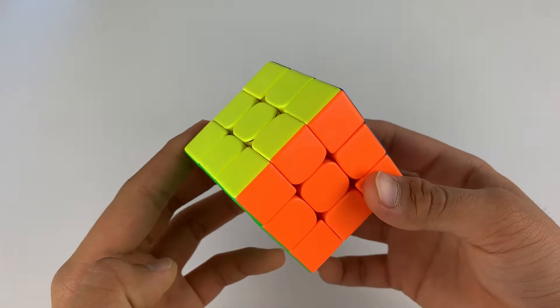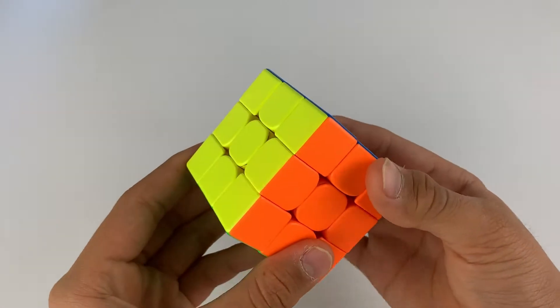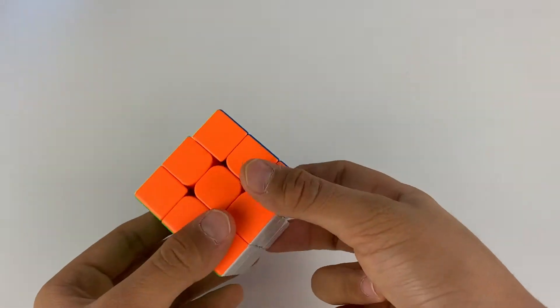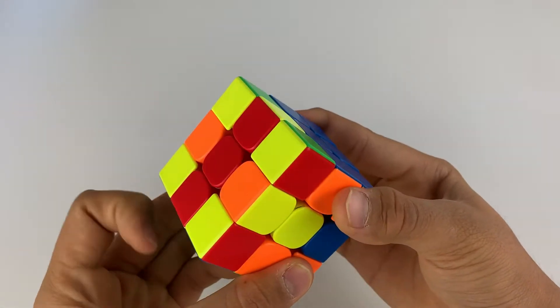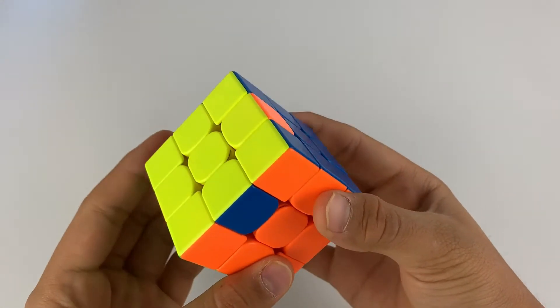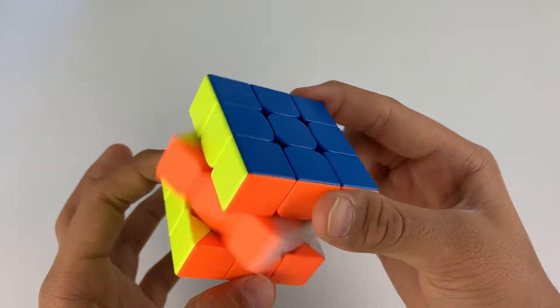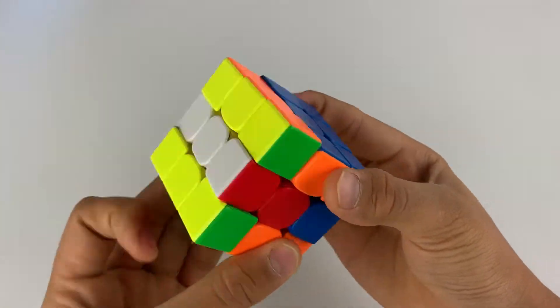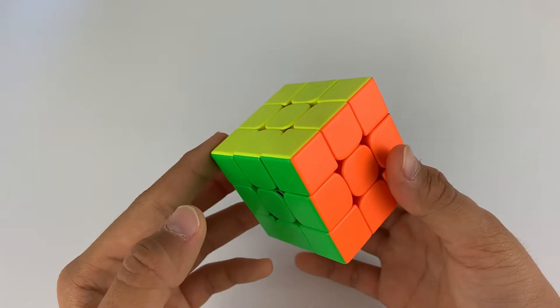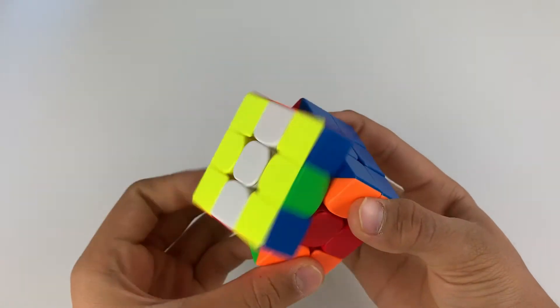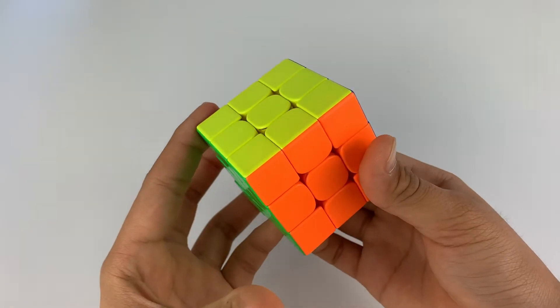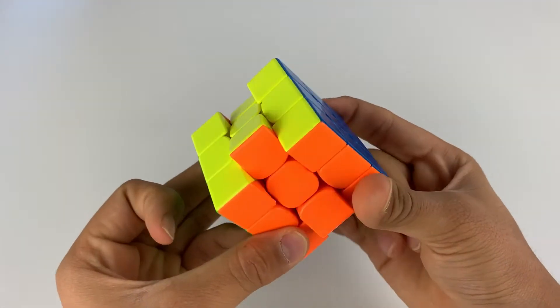The next basic finger trick you should learn is M2. Here's an algorithm with only M moves. Next, an algorithm with M2 moves. The M2 flick is useful in the U perms, H perms, and Z perms.